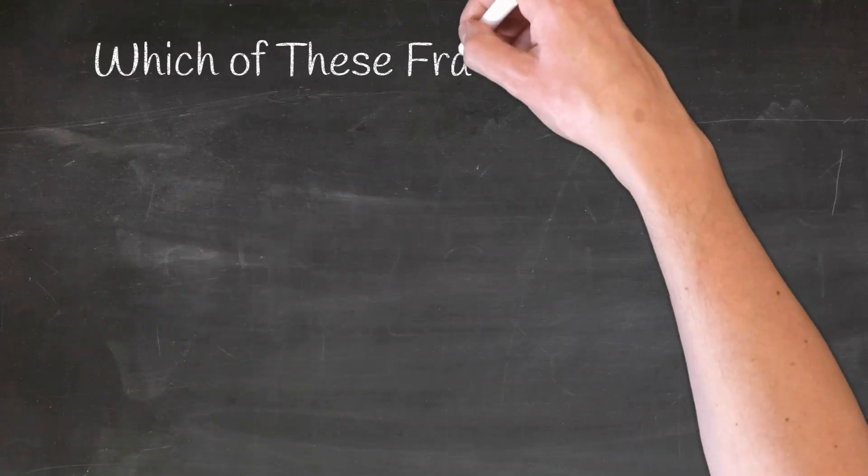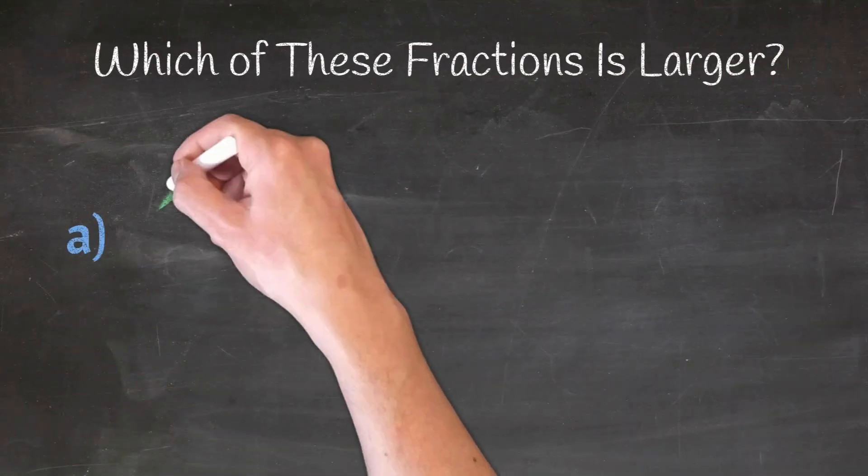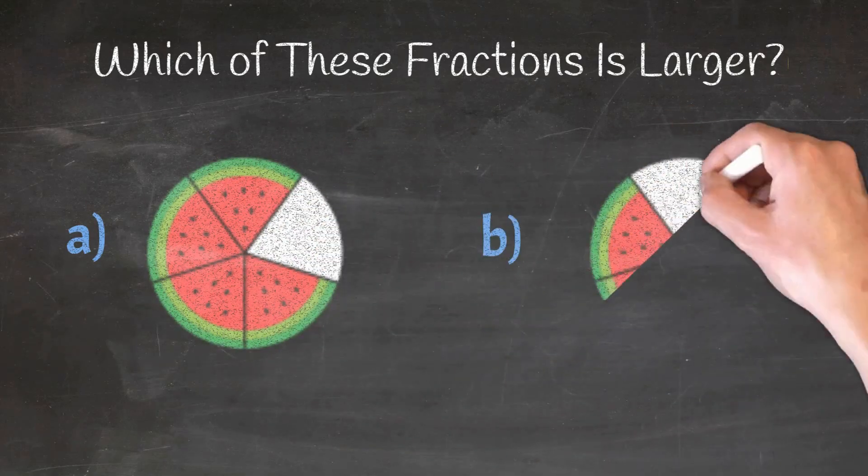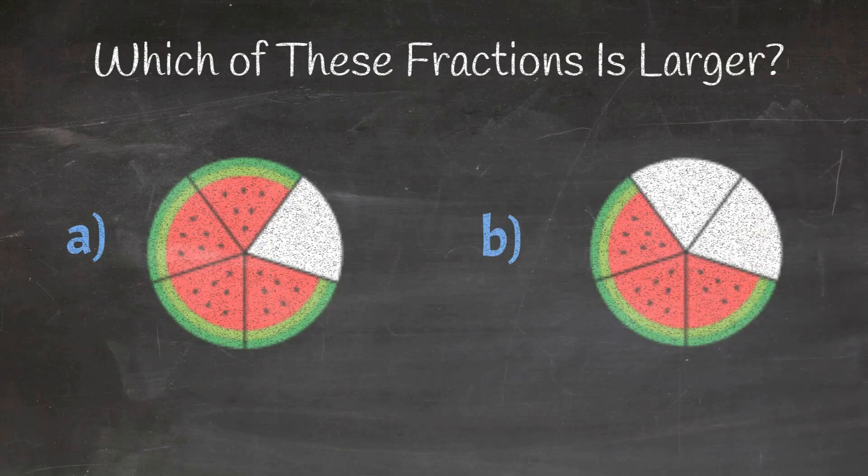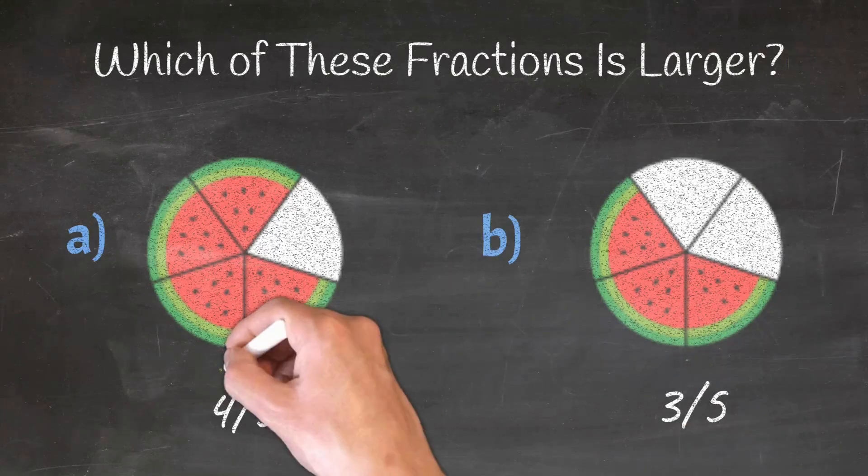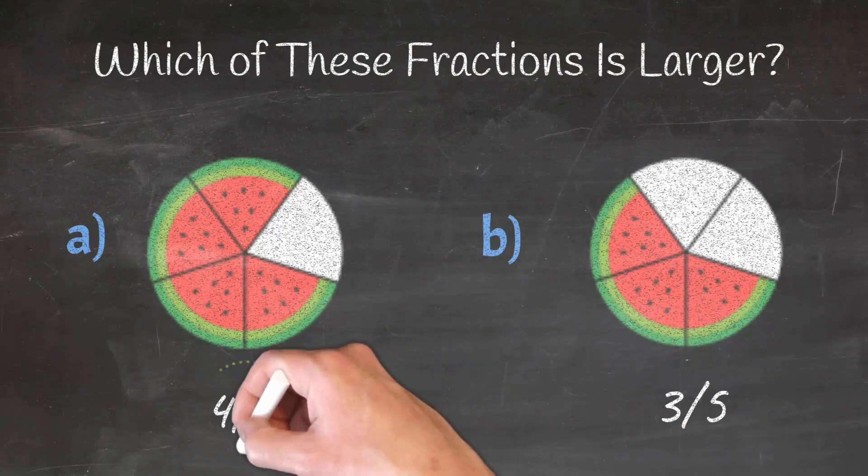Which of these fractions is larger? Fraction A or fraction B? Fraction A is four-fifths and fraction B is three-fifths, so fraction A is larger than B.